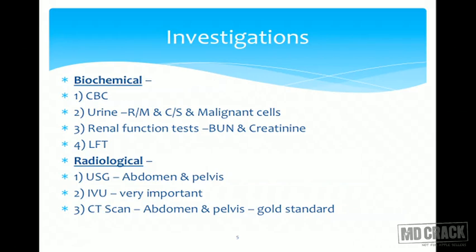For investigations, basic biochemical tests include CBC. Urine routine and microscopy will show malignant cells, casts, gravels, and hematuria. Culture sensitivity will detect concomitant infection in the kidney, and urine cytology will show malignant cells. Renal function tests may be normal with a small tumor, but larger tumors cause renal compromise. Since this tumor metastasizes to the liver, liver function tests are also important.